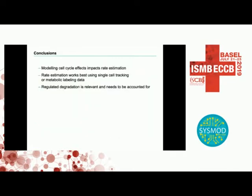In one case you can have the same effect with a different regulation, but you can also have different effects so that the patient is not responding — like when you want to apply it in practice. The conclusions are that cell cycle has an impact on the estimation of parameters, and not all published work includes cell cycle modeling. Rate estimation works best with single-cell tracking data or metabolic labeling, and regulated degradation is relevant also for cell cycle or immune response. As modelers, we really need to put more emphasis on this possibility for regulation — it's not always a linear term.